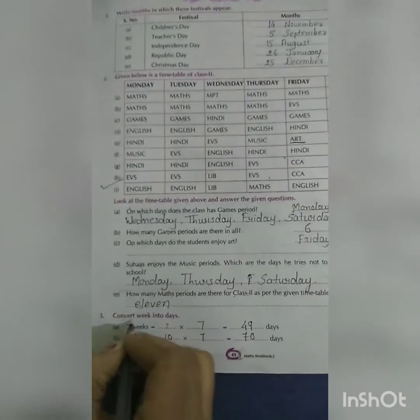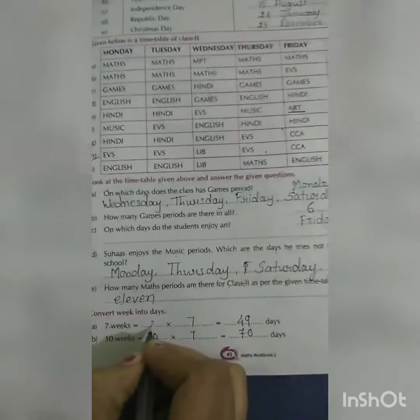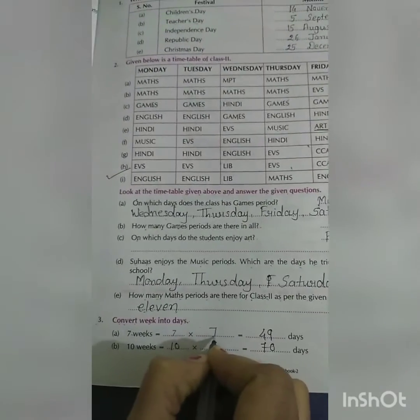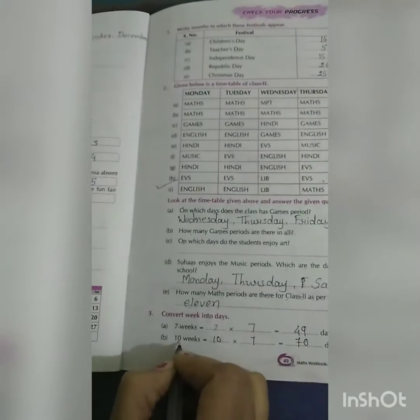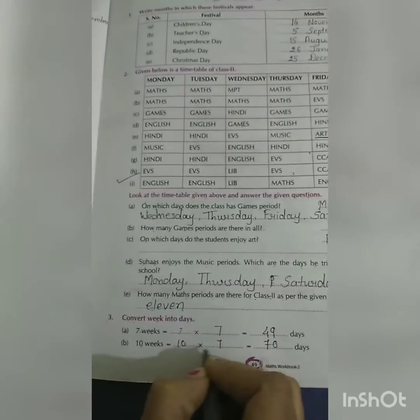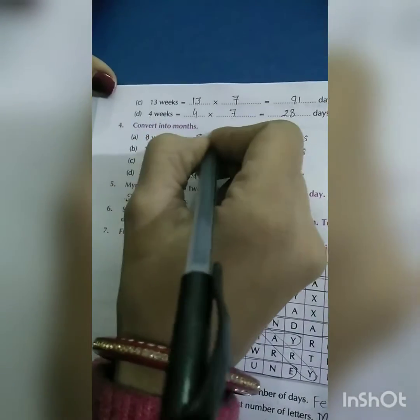Number 3: Convert weeks into days. 7 weeks: 7 × 7 = 49 days. 10 weeks: 10 × 7 = 70 days. 13 weeks: 13 × 7 = 91 days. 4 weeks: 4 × 7 = 28 days.